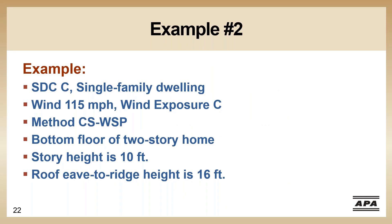Example two is going to be the first level of this same house. The wind characteristics are the same — 115 miles per hour, exposure C, seismic design category C, single family. What we're going to change is our method. On the first floor, we're going to use method continuously sheathed wood structural panel. We do have a taller story height — 10 feet — with the same roof eave to ridge height.